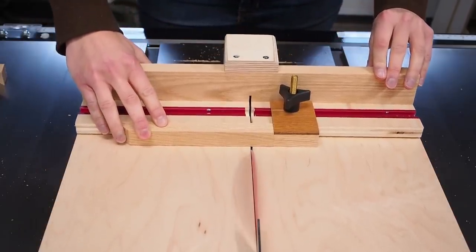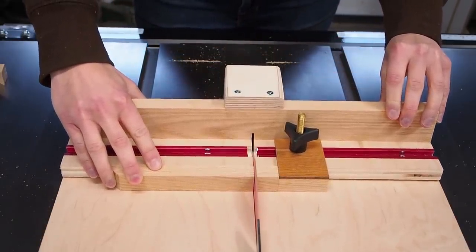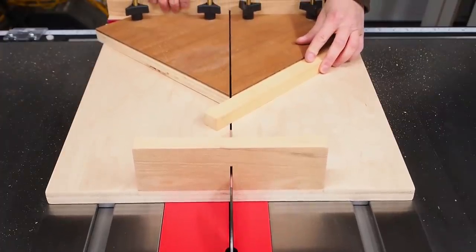Hi there! Today I'm going to show you how I made this small parts crosscut sled with an adjustable stop and a miter attachment.